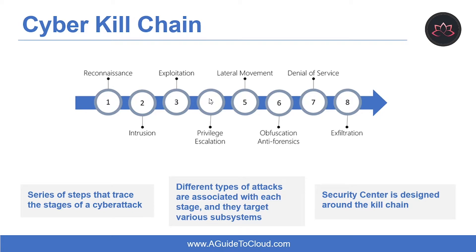The Security Center's threat protection includes Fusion Kill Chain Analysis, which automatically correlates alerts in your environment based on cyber kill chain analysis to help you better understand the full story of an attack campaign — where it started and what kind of impact it had on your resources. Let me help you understand the typical stages of a cyber attack.